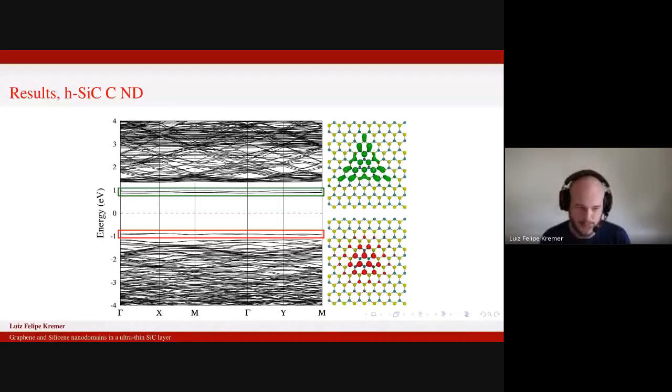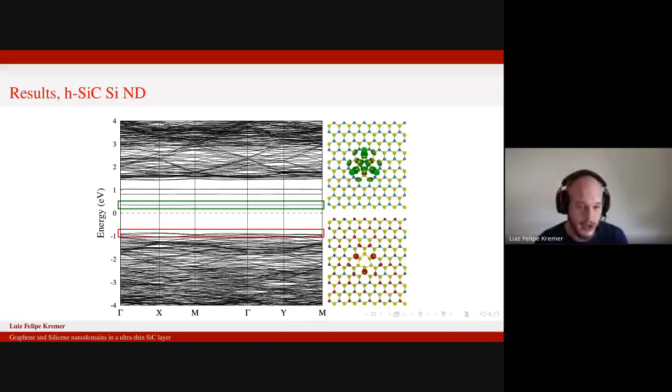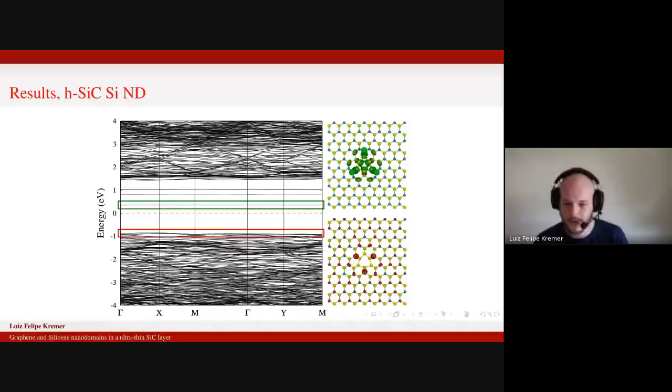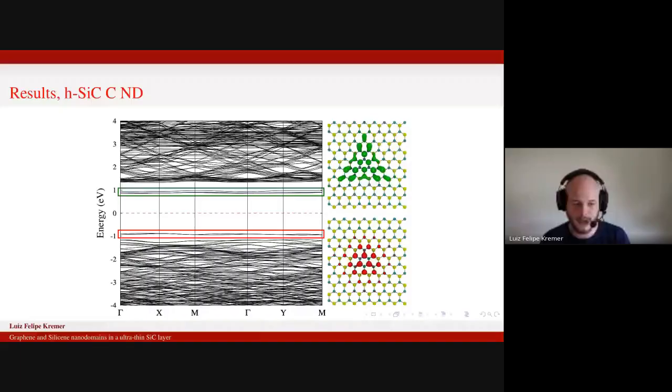For the silicon nanodomain, we have almost the same behavior, but now we have more electronic levels inside the band gap. If you look again on the right side, we have the charge density surfaces, but this time, if you look at your valence band maximum, you can see that it's not a discrete level, it's more like a perturbation in the band, different from the graphene case.